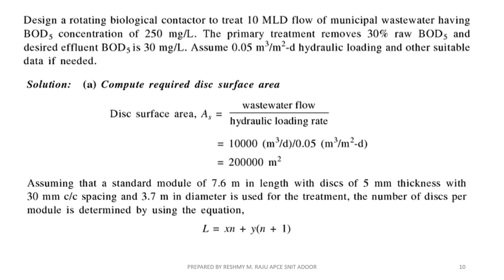Design problem: Design a rotating biological contactor to treat 10 MLD flow of municipal wastewater having a BOD5 concentration of 250 mg/L. Primary treatment removes 30% of raw BOD5, and the desired effluent BOD5 is 30 mg/L. Assume a hydraulic loading of 0.05 m³ per m² per day. Calculate the surface area first using the hydraulic loading equation, then determine the dimensions of the standard module with a shaft length of 7.6 meters.